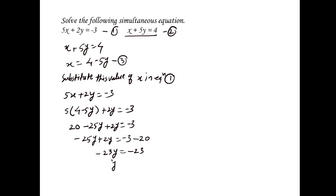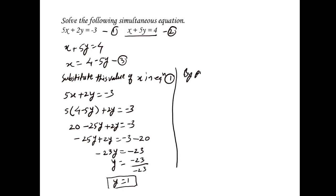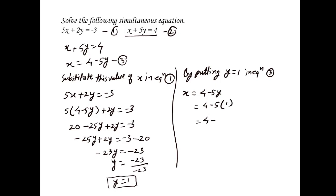So minus 25y plus 2y equals minus 3 minus 20, giving minus 23y equals minus 23. Therefore y is equal to minus 23 upon minus 23, so y is equal to 1. Putting y equals 1 into equation 3: x is equal to 4 minus 5 times 1, which is 4 minus 5, so x is equal to minus 1. The solution is x equals minus 1 and y equals 1, i.e., the solution is (minus 1, 1).